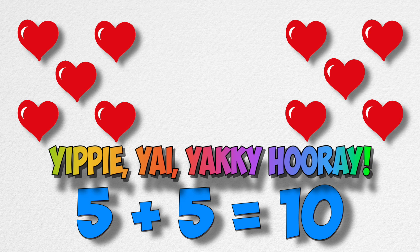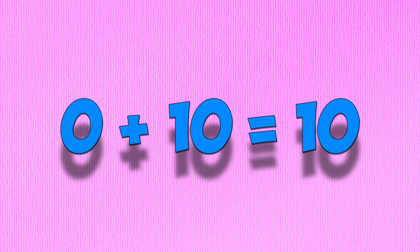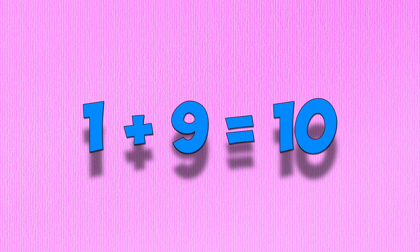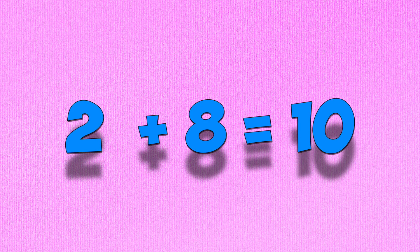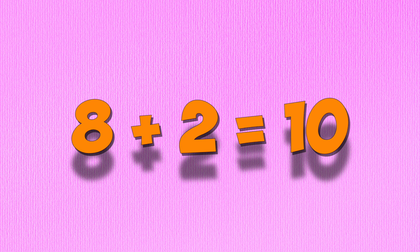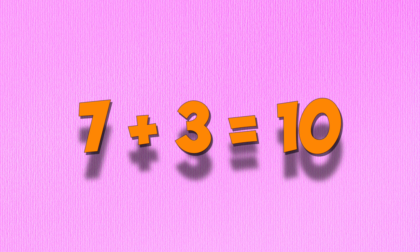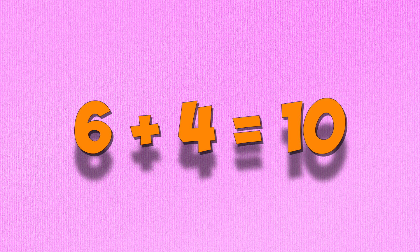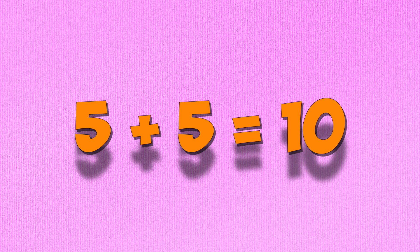The students screamed, yibby ayakki hurray! Let's find the other hearts hidden today! And then they sang the making tens song again: 0 plus 10 is 10, and 10 plus 0 is 10, through all six combinations up to 5 plus 5 is 10.